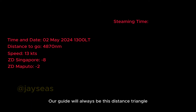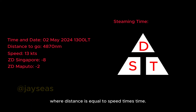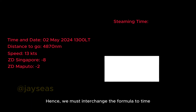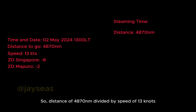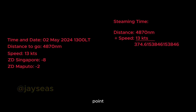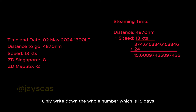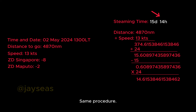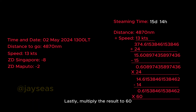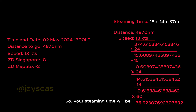First, we solve the steaming time. Our guide is the distance triangle: distance equals speed times time. Since we're finding time, the formula becomes time equals distance divided by speed. So 4,870 nautical miles divided by 13 knots gives 374.6153... Divide by 24 to get days — the whole number is 15 days. Subtract and multiply the remainder by 24 to get hours — the whole number is 14 hours. Multiply the remainder by 60 to get minutes — which is 37. So steaming time is 15 days, 14 hours, and 37 minutes.